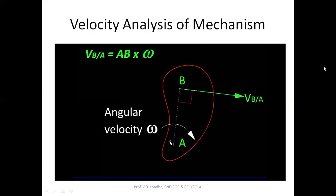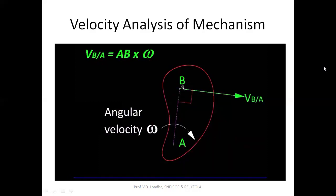Now what about the magnitude? That's easy too. If the distance between A and B is not altering, then B can only move in circular motion relative to A. The velocity in circular motion is given by the radius AB multiplied by the angular velocity ω. So velocity of B relative to A is the distance AB multiplied by ω. This result helps us locate the velocity image of one point relative to the velocity image of another point in the same rigid body.